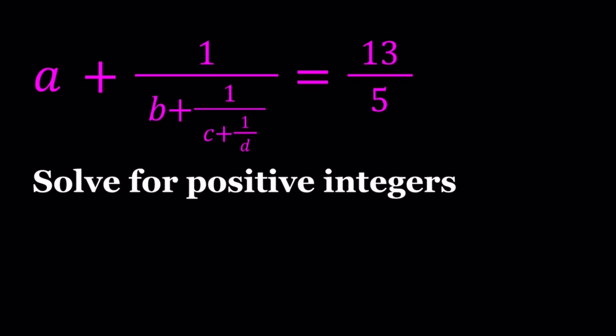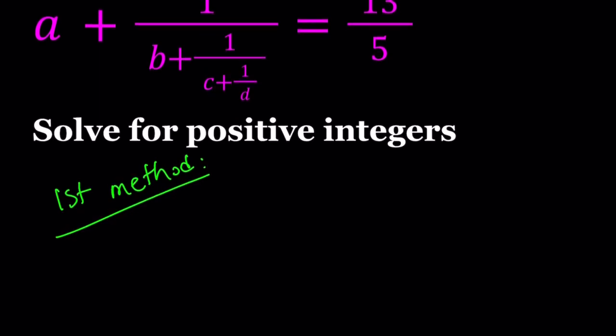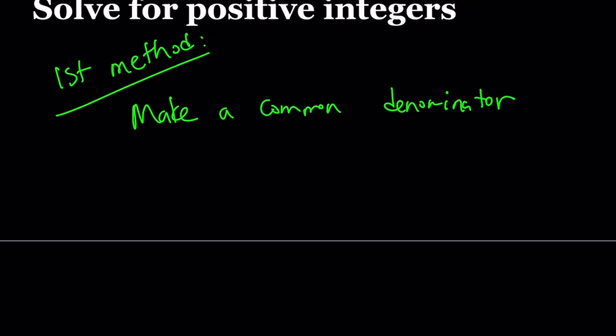First method. Even though I'm not going to completely solve it with the first method, I just want to show you an approach. First method involves making a common denominator. The reason why I show you that is because sometimes you do things that you shouldn't be doing, and they are very painful.